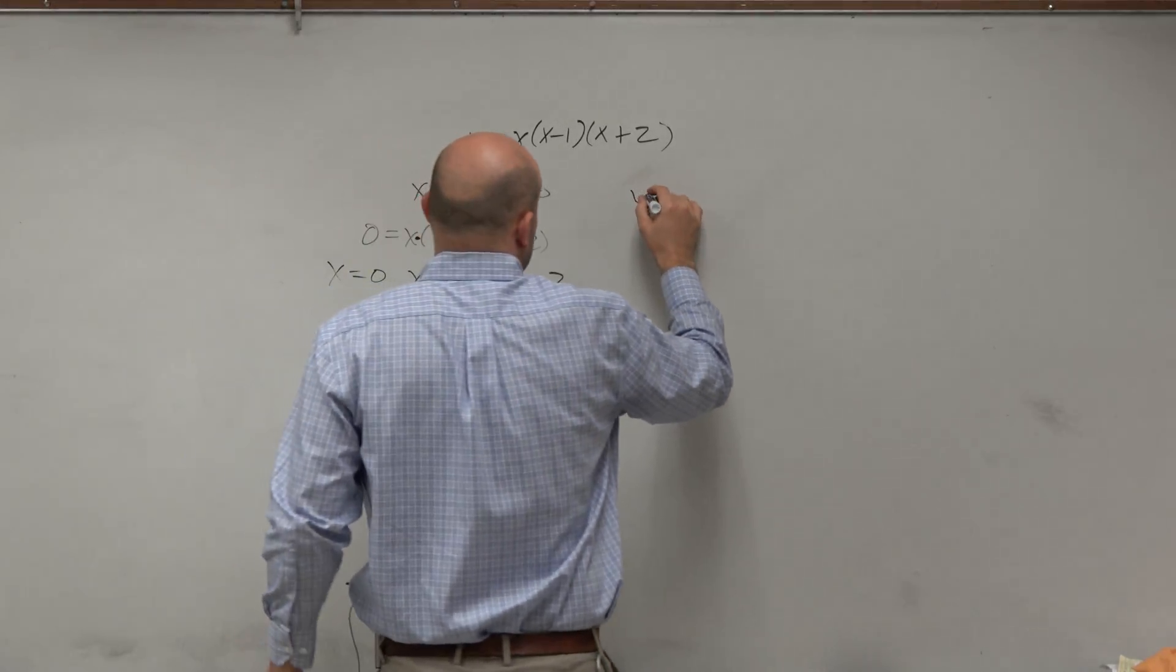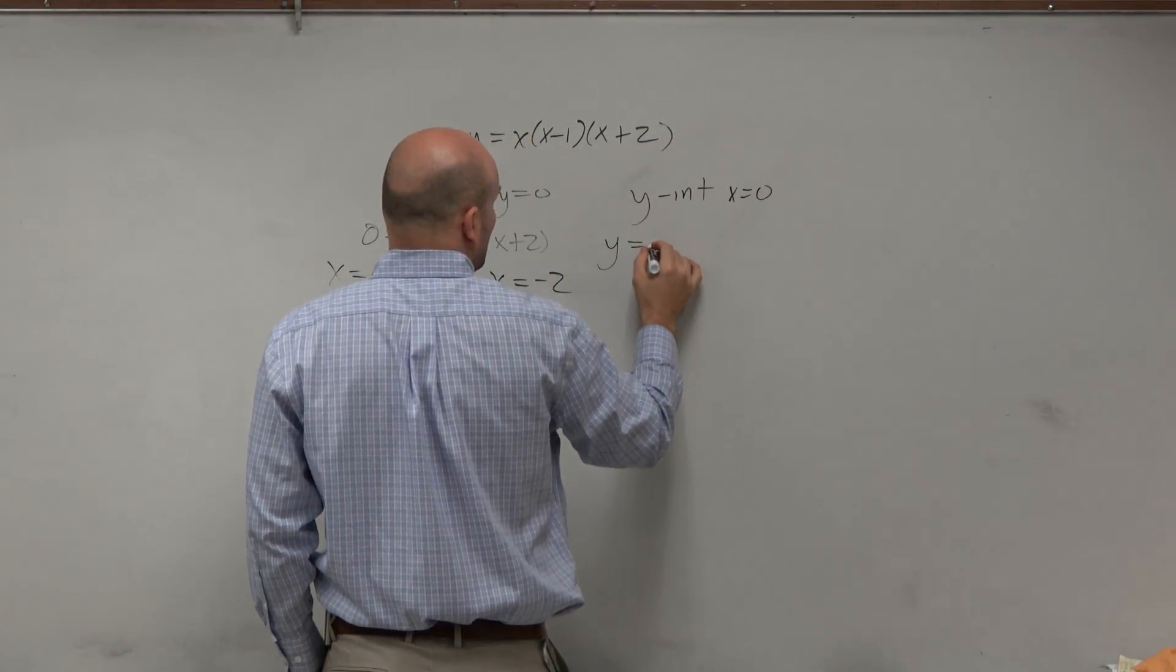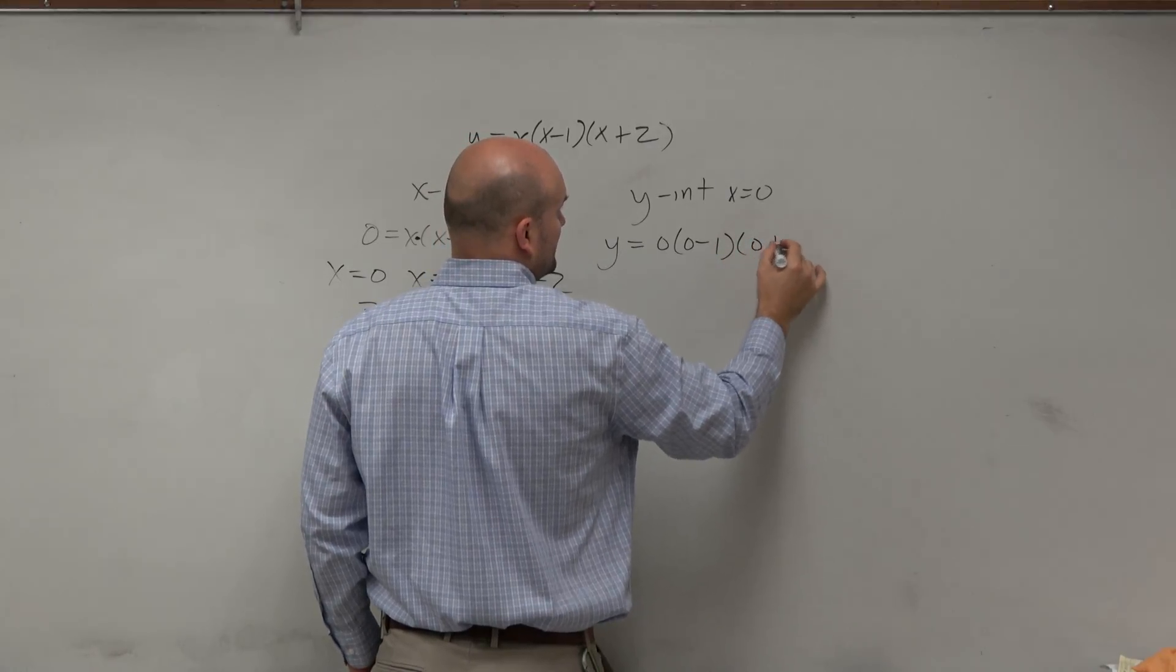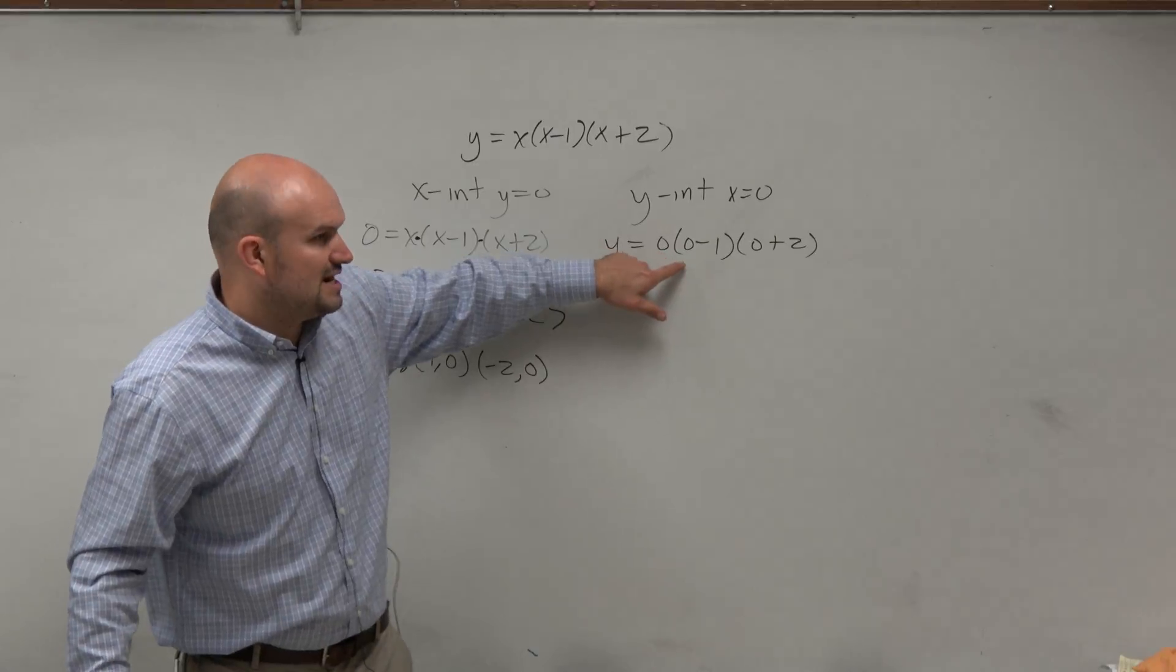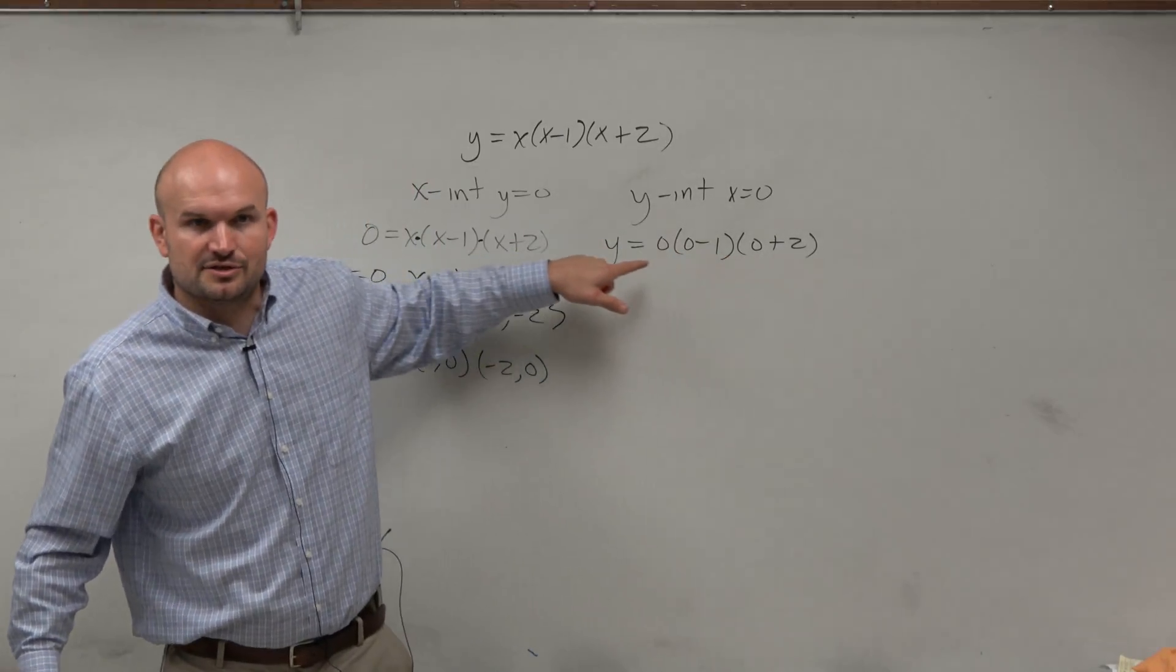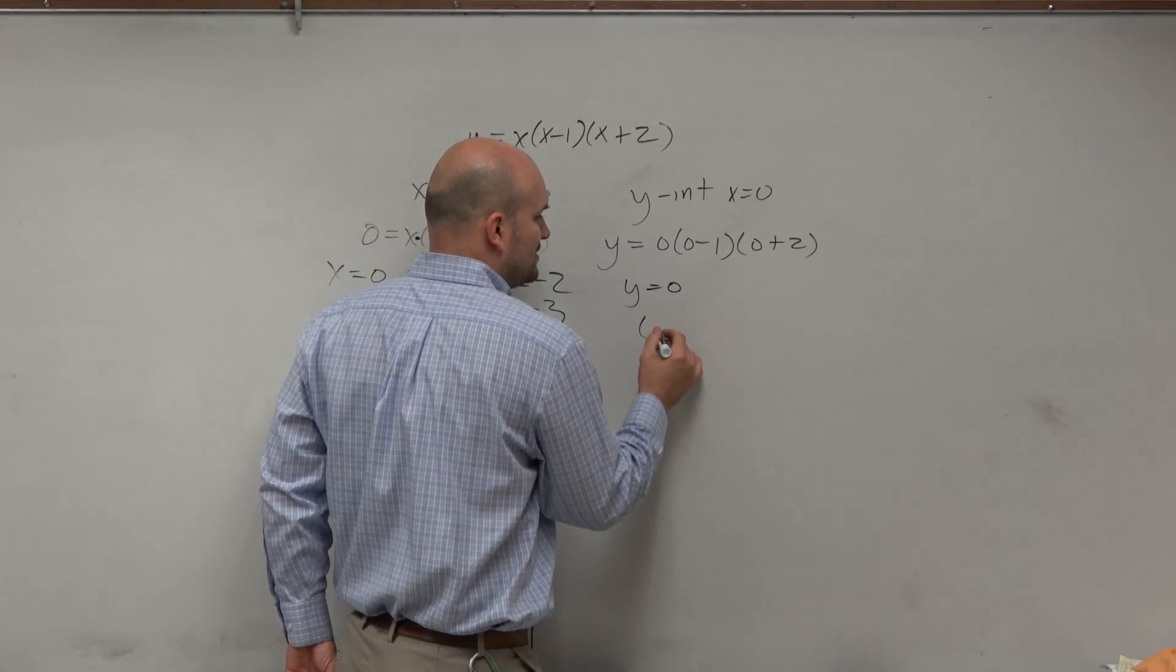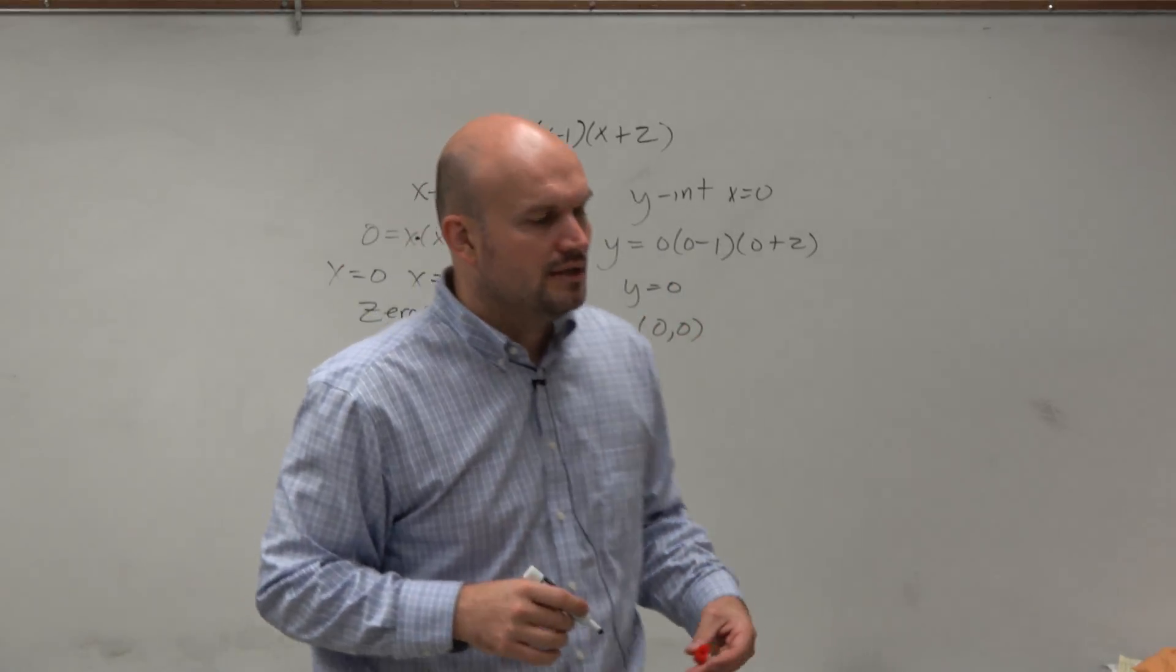The y-intercept is when x is equal to 0. So I'll write it out for you guys, this first one. But what I want you guys to see is, if I have 0 times either of these, what is my final answer going to be? Zero. So y is equal to 0. Therefore, the y-intercept is (0, 0), or at least as a coordinate point.